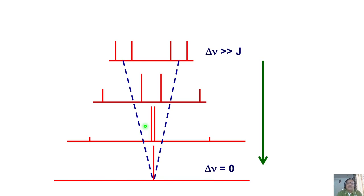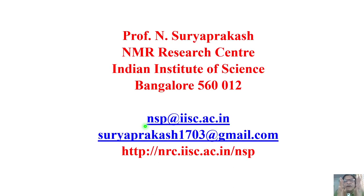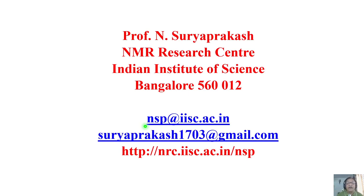We extended this logic, but when the chemical shift separation became much smaller compared to J coupling, we got an AB pattern. I showed you how the AB pattern has two center lines of equal intensity which are much more intense peaks compared to the two outer transition lines, which are of very weak intensity. I also mentioned that the separation of any two outer lines gives you J coupling. For the strongly coupled AB spin system, it is not possible to get the individual chemical shifts.